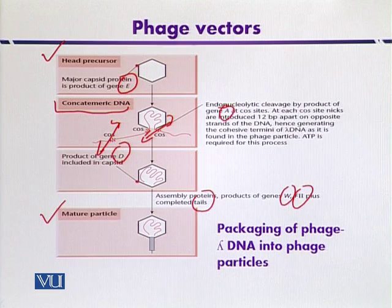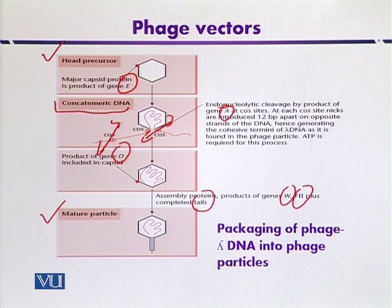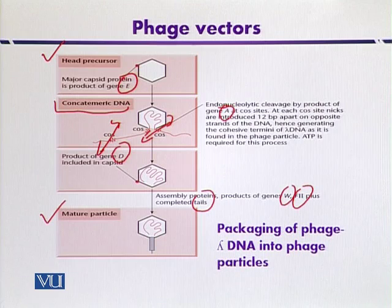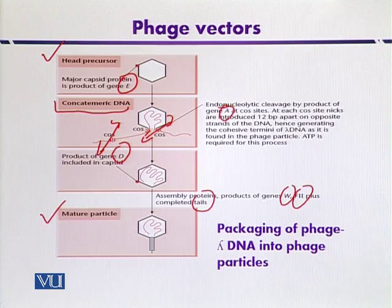In this way we can get phage particles that contain our recombinant DNA molecule. Under natural conditions, the lambda genome is effectively packaged in the form of concatemeric DNA. But in vitro, we can also provide the monomeric DNA molecule if high concentrations of vital proteins — like the phage packaging proteins including the head and tails — are also present. So in vitro packaging can be effective when we supply the phage particles with monomeric DNA.